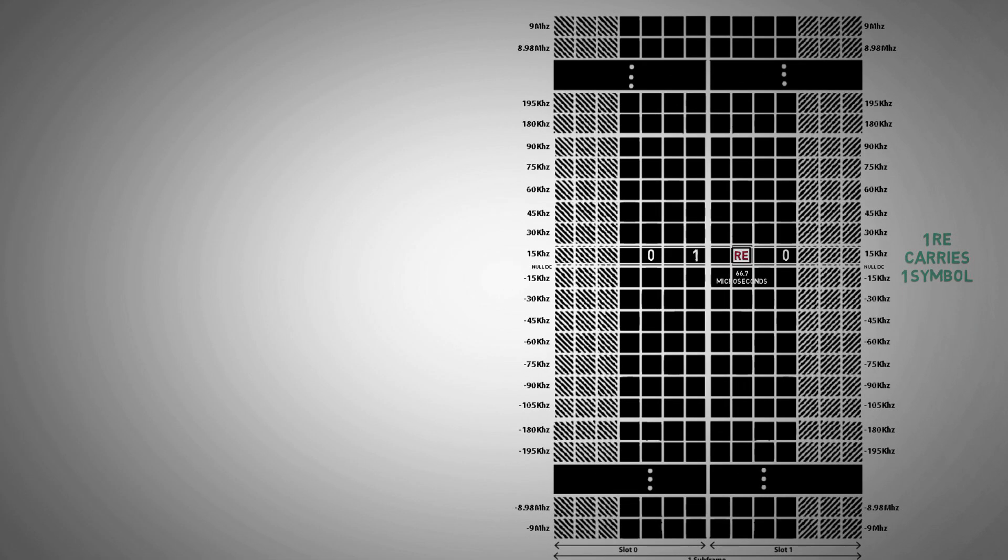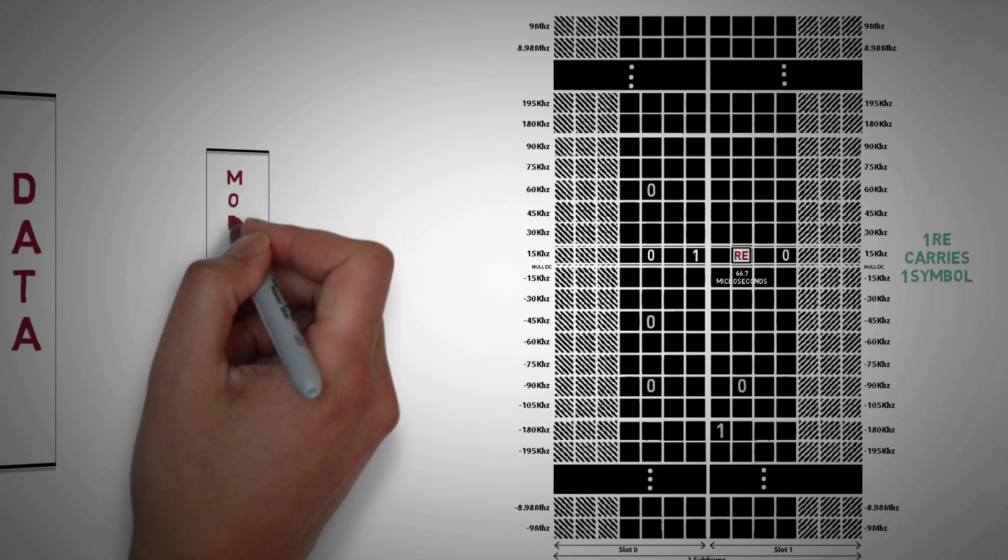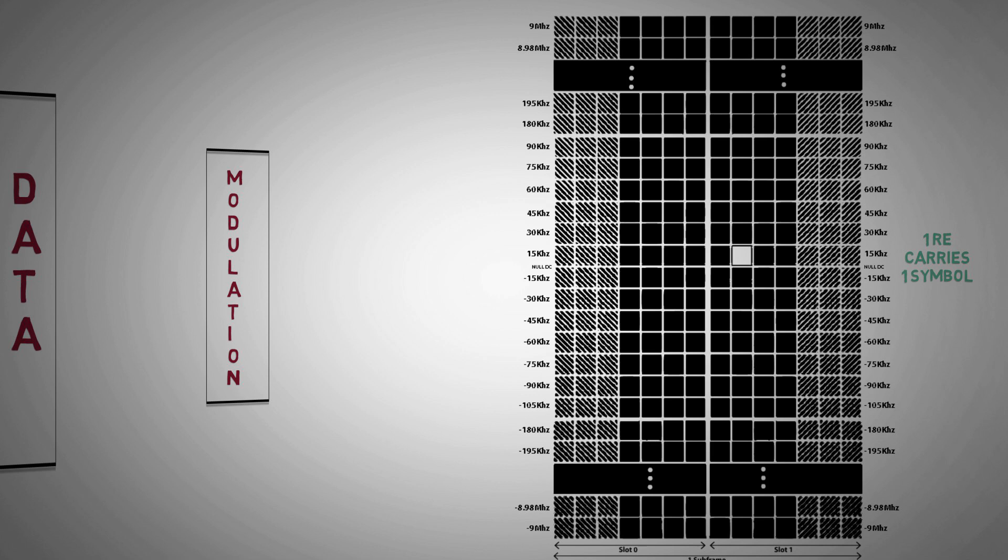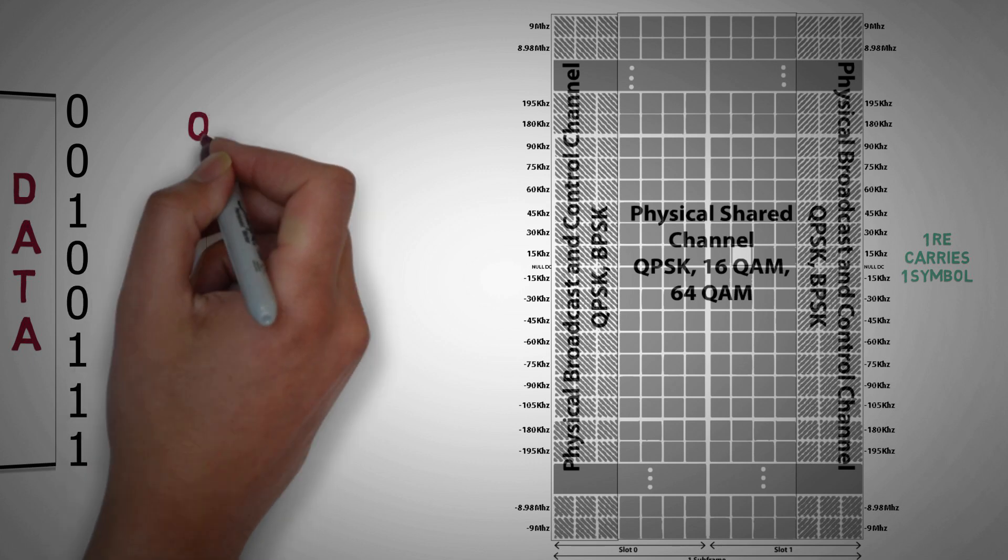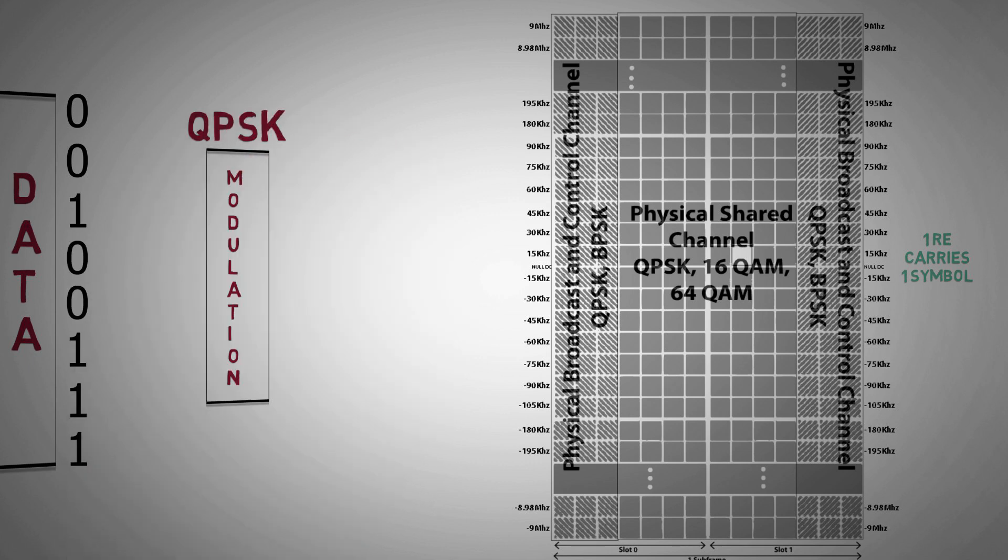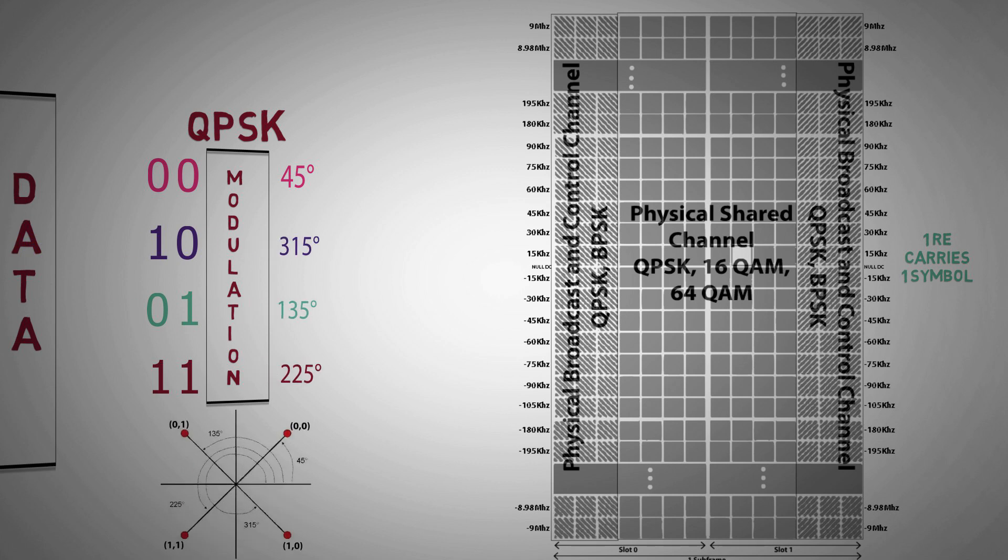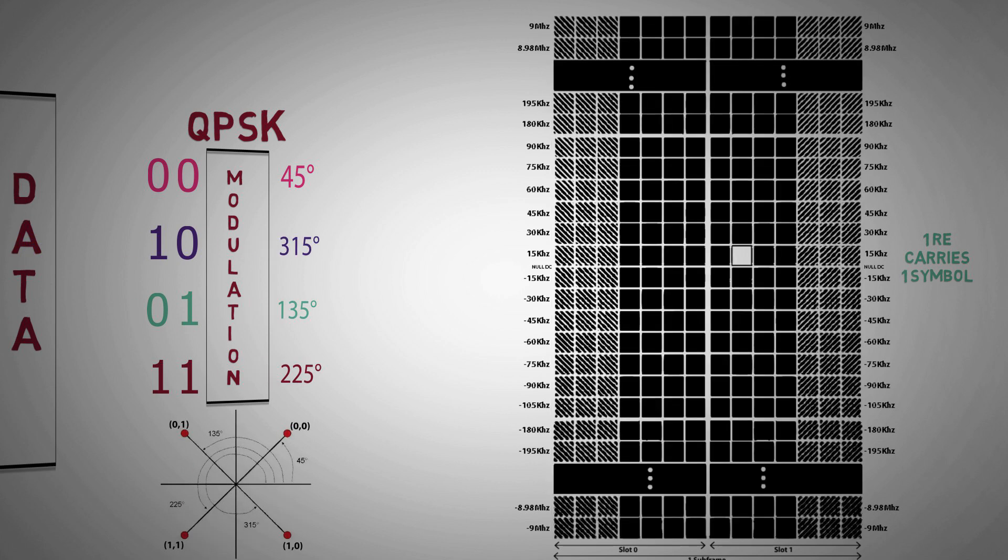In order to transmit data over these resource elements, first data is modulated with a specific modulation scheme. This scheme depends on the physical channels mapped on the resource grid. Suppose we have 8 bits of data to be transmitted using QPSK modulation. The data will be divided into 4 parallel streams of 2 bits. Phase and amplitude assignment is done according to the QPSK constellation. Finally, data is placed over the resource elements by adjusting the phase and amplitude of sub-carrier to those derived for the data stream.